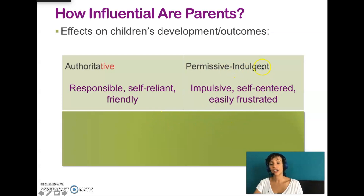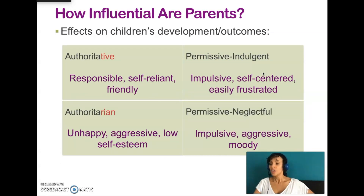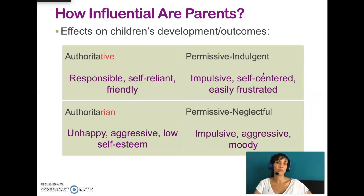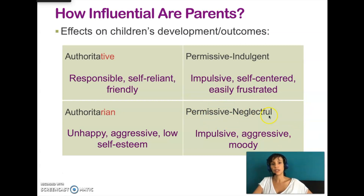On the other hand, children of permissive indulgent parents are often impulsive and easily frustrated. They exhibit little self-control, are self-centered, and tend to clash with authority. Children of authoritarian parents tend to have lower self-esteem, lack autonomy and identity, and are less skilled socially. They tend to exhibit lower school achievement, more aggression, and oppression. Authoritarian parenting has been associated with poor academic achievement and depressive symptoms. Finally, the permissive neglectful parenting style has been associated with poor self-control, low self-esteem, and aggression as well.